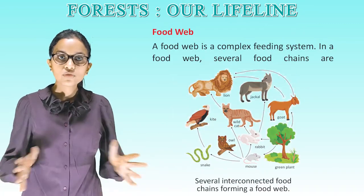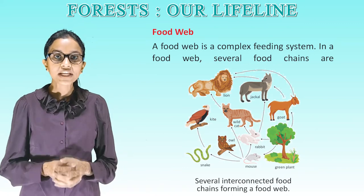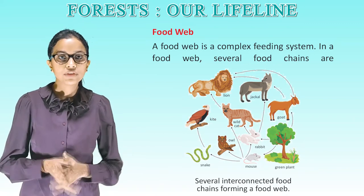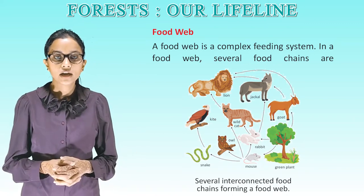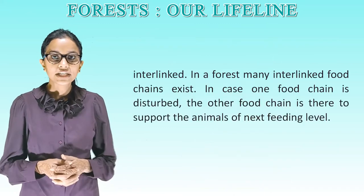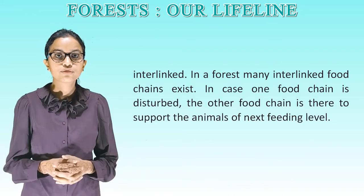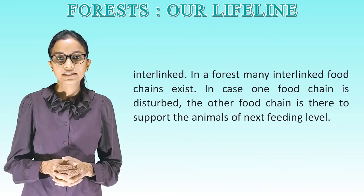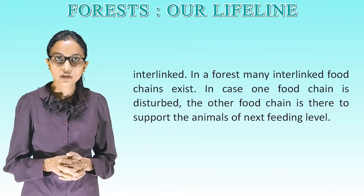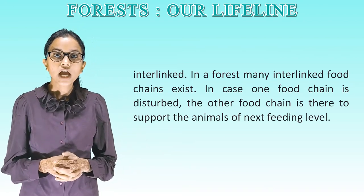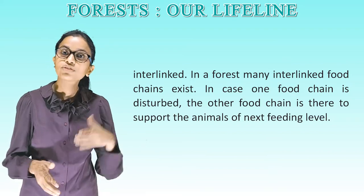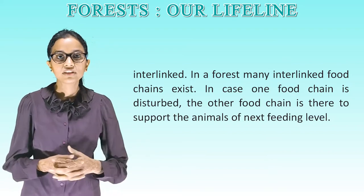Food web: A food web is a complex feeding system in which several food chains are interlinked. In a forest, many interlinked food chains exist. If one food chain is disturbed, another food chain is there to support the animals of the next feeding level.